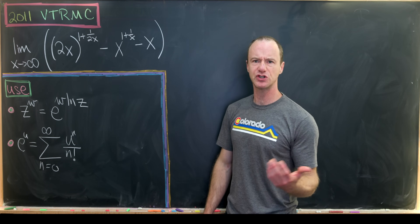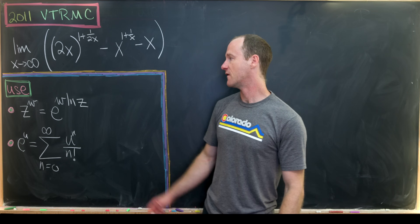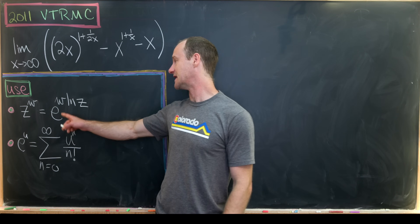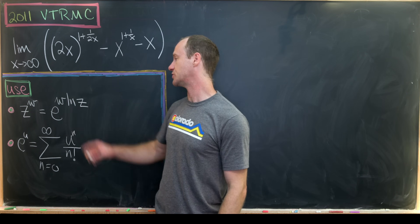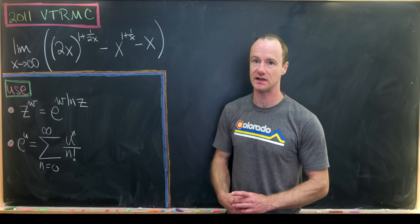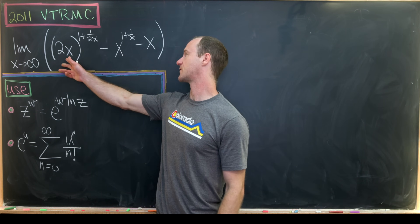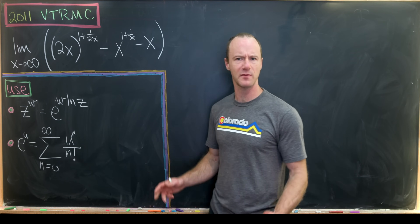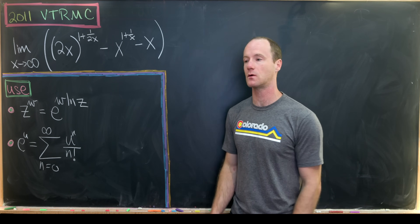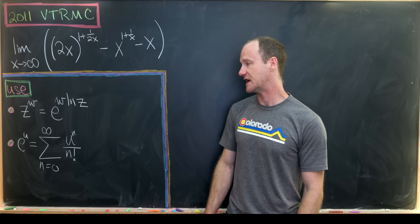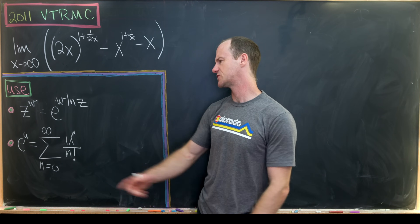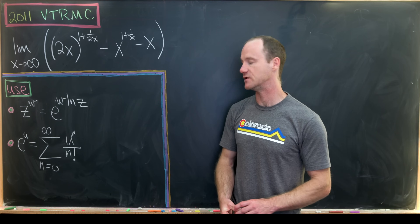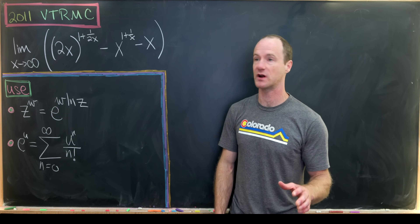We're going to use two main tools. First, z to the w power is the same as e to the w times the natural log of z — that'll be helpful for the first and second terms. We'll also need the Taylor (Maclaurin) expansion of the exponential function: e to the u equals the sum as n goes from 0 to infinity of u to the n over n factorial.